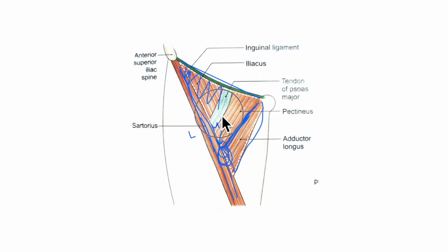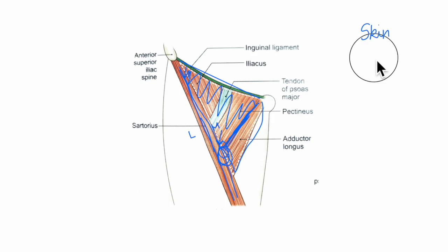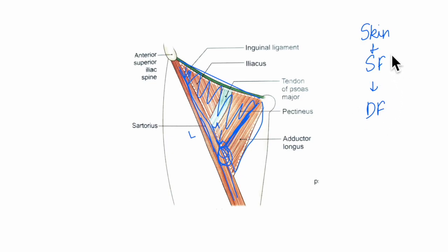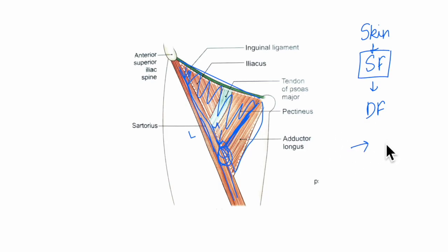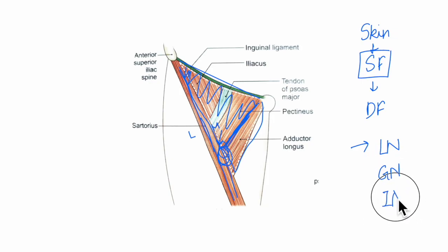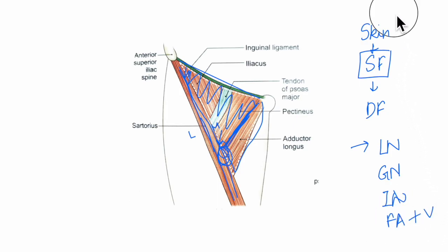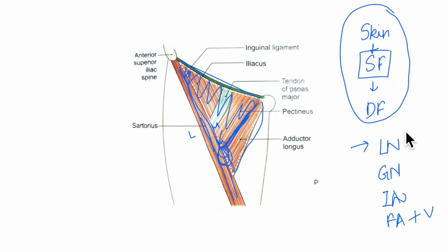The roof of the femoral triangle is formed by the overlying skin, the superficial fascia beneath it, and then the deep fascia. The superficial fascia contains important structures like the superficial inguinal lymph nodes, the femoral branch of the genitofemoral nerve, the branches of the ilioinguinal nerve, and the superficial branches of the femoral artery with accompanying veins.